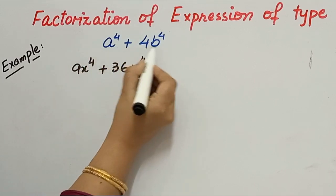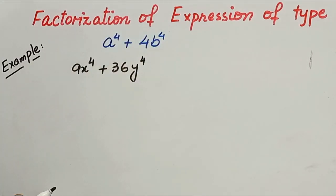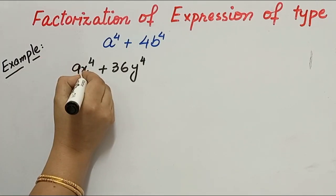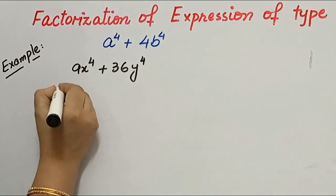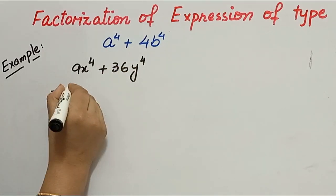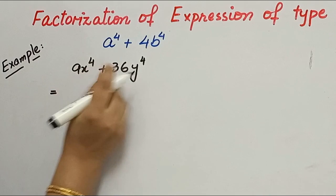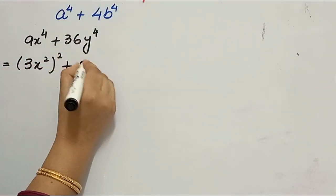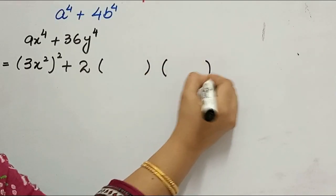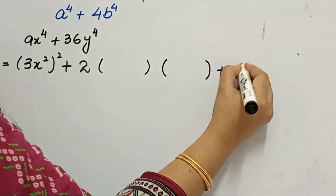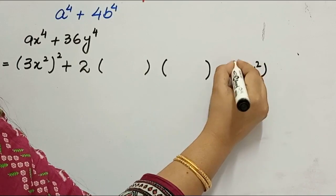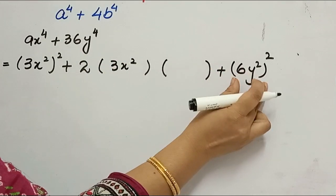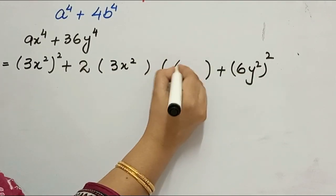Now let's discuss the other type: a⁴ + 4b⁴. The example is 9x⁴ + 36y⁴. First, we complete the square. It can be written as (3x²)² + 2 × (blank) + (6y²)². The blank is filled with 3x² and 6y², giving 2 × 3x² × 6y² = 36x²y² as the middle term.